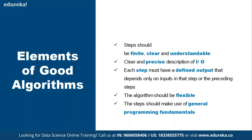A good algorithm should have clear information about the expected input and output. Every step must have a defined output — if it is a computation you should know the result, and if it is an input or output step you should know what you're achieving. The steps should be flexible, meaning they are allowed to change when required. You should also follow programming language best practices such as proper indentation for branching conditions, so that switching from algorithm to code is easy.